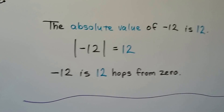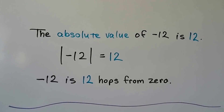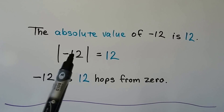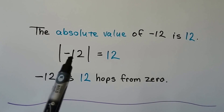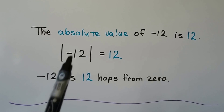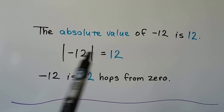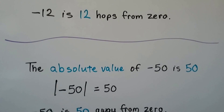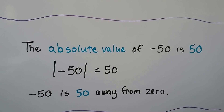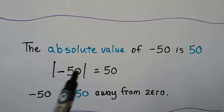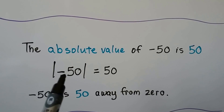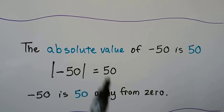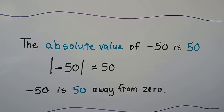The absolute value of negative twelve is twelve. You'll see it inside the bars — it wants the absolute value of negative twelve. It's twelve hops away from zero. The absolute value of negative fifty is fifty. When you see it inside the bars, it wants you to tell how many hops away it is from zero. It's fifty hops away from zero.